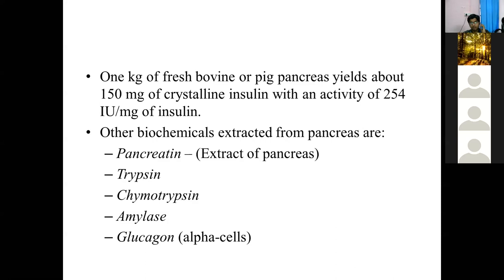Other biochemicals obtained from pancreas include: glucagon, a hormone from alpha cells with reverse activity to insulin; pancreatine, which is a crude extract of pancreas with no separation of enzymes and hormones; and digestive enzymes — trypsin, chymotrypsin, and amylase. These three enzymes are utilized for different medicinal and pharmaceutical purposes. These enzymes are also used in tanneries, such as in the leather industry, for conditioning purposes.